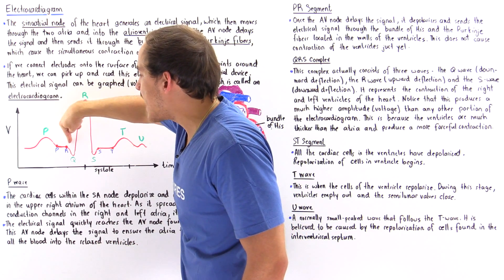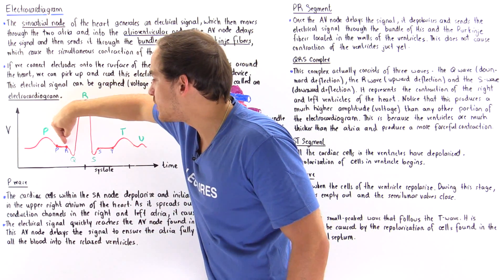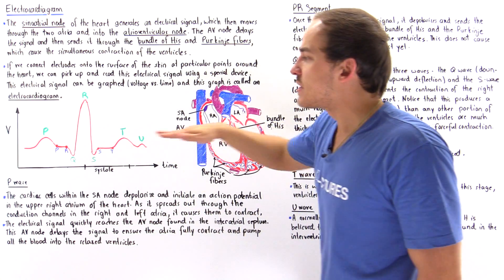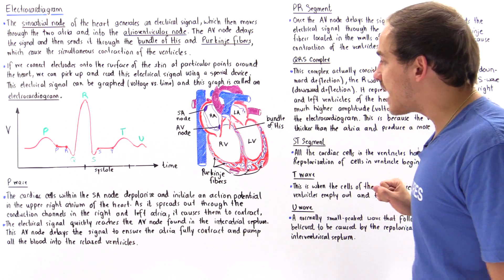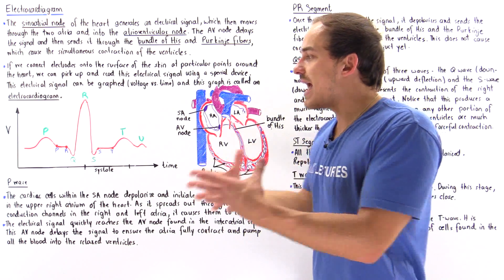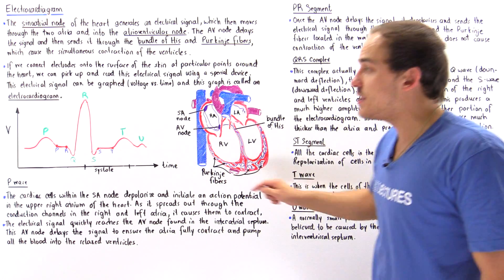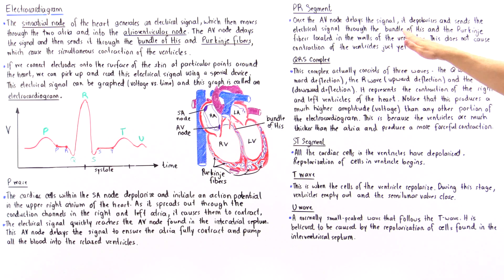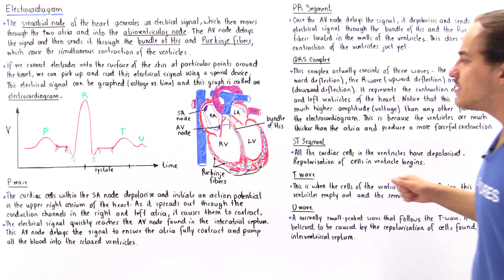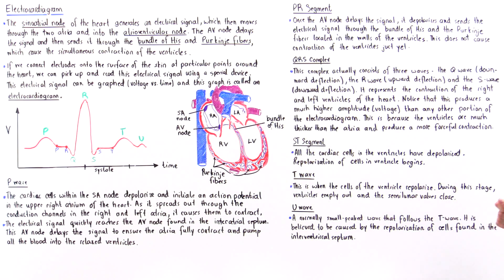Moving on to the PR segment: this segment has essentially zero voltage difference, producing a flat line with zero slope. Within this section, the AV node sends that electrical signal through the bundle of His and through the Purkinje fibers, which permeate through the walls of the two ventricles. No contraction actually takes place during this segment.